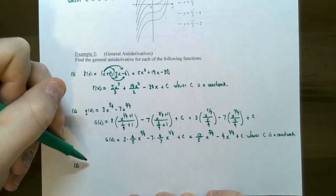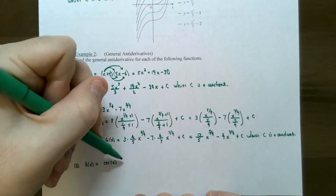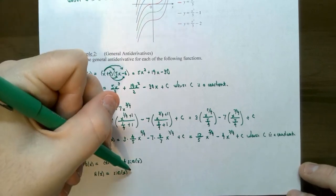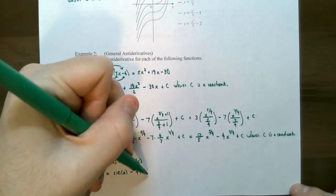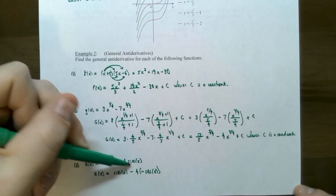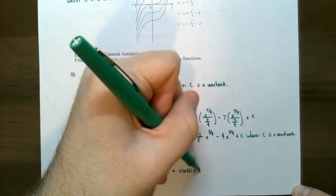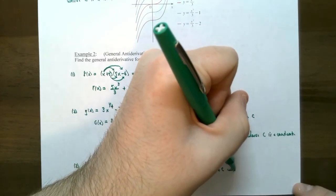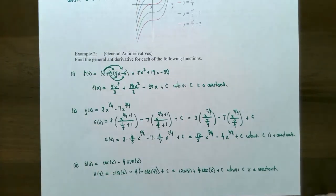Number 3: h(x) = cos(x) − 4 sin(x). The antiderivative of cos(x) is sin(x). For −4 sin(x), the antiderivative of sin(x) is −cos(x), so −4 sin(x) becomes +4 cos(x) since two negatives cancel. Therefore H(x) = sin(x) + 4 cos(x) + C, where C is a constant. Always include + C for the general antiderivative.